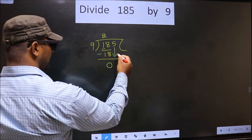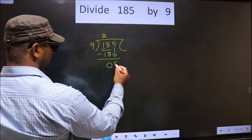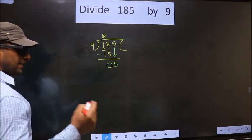Now we bring down the next number, that is 5. This is where the mistake happens.